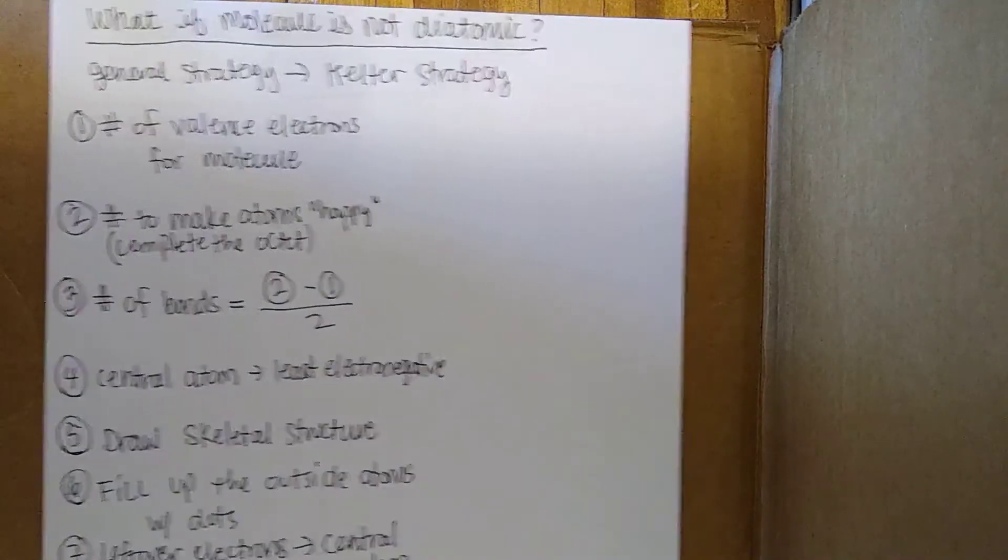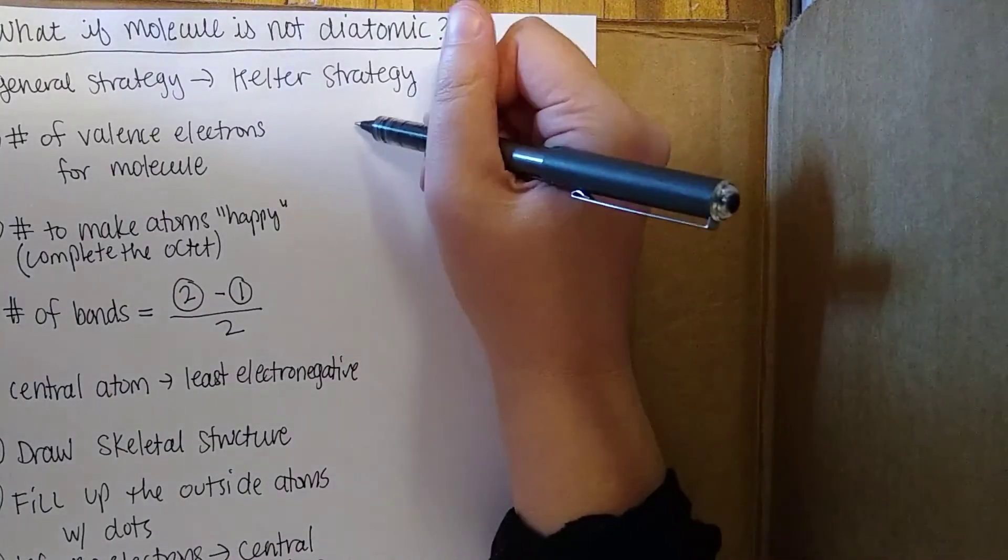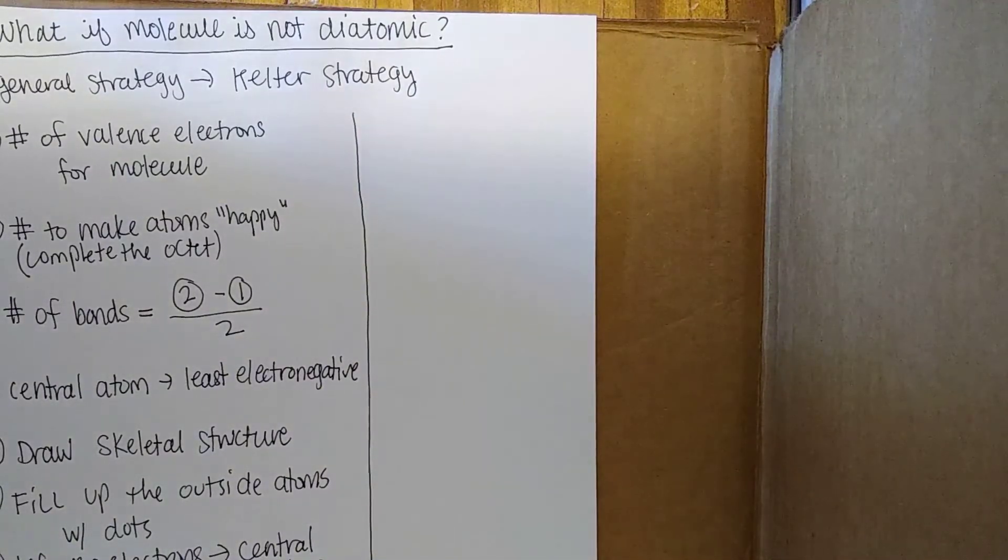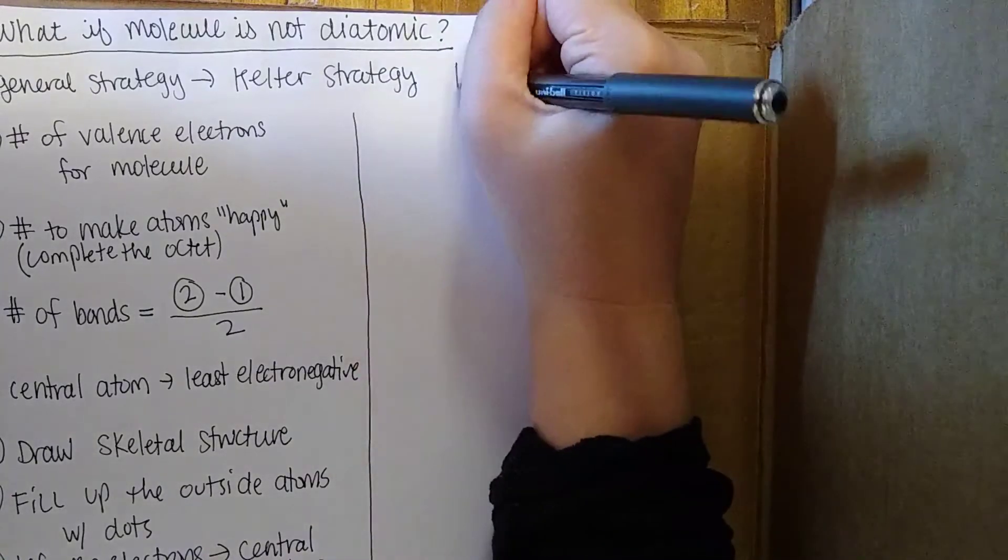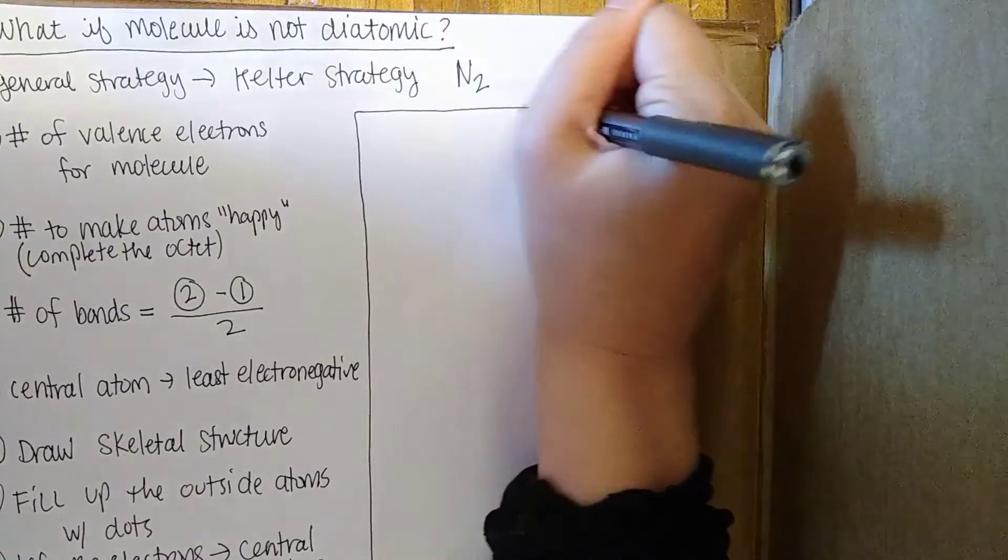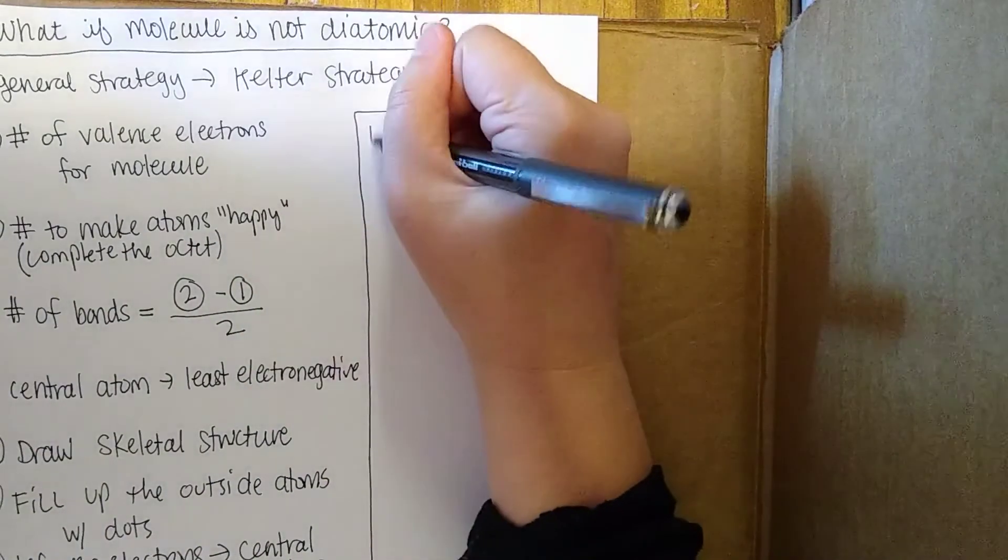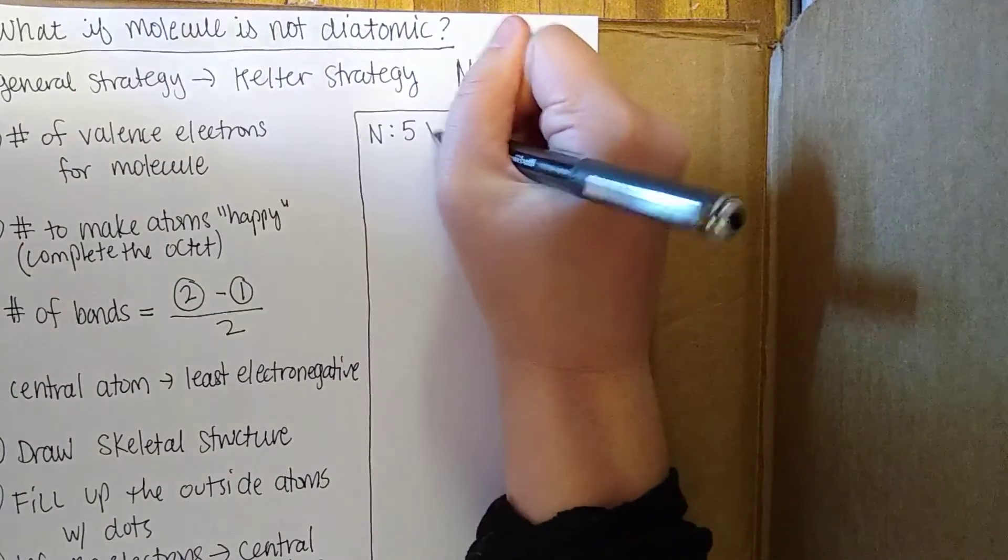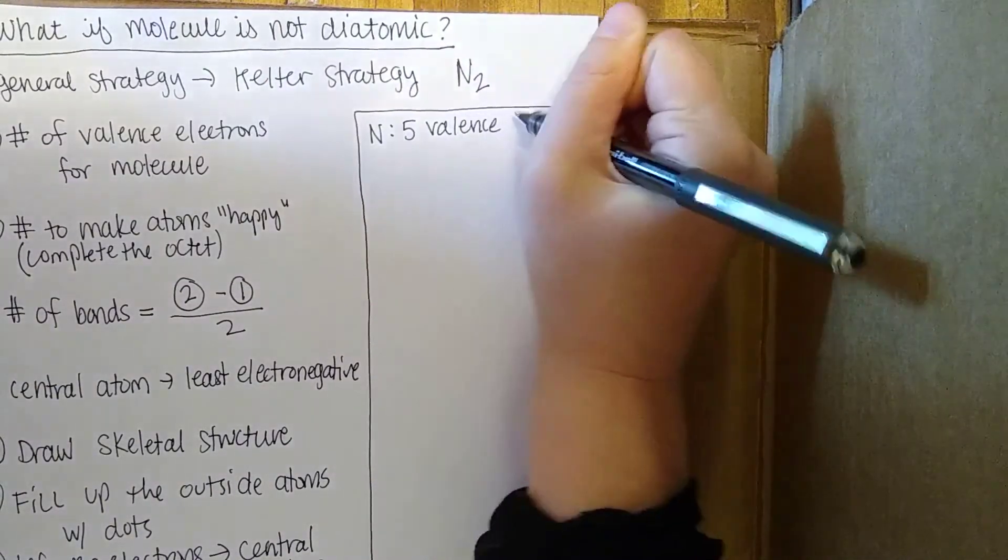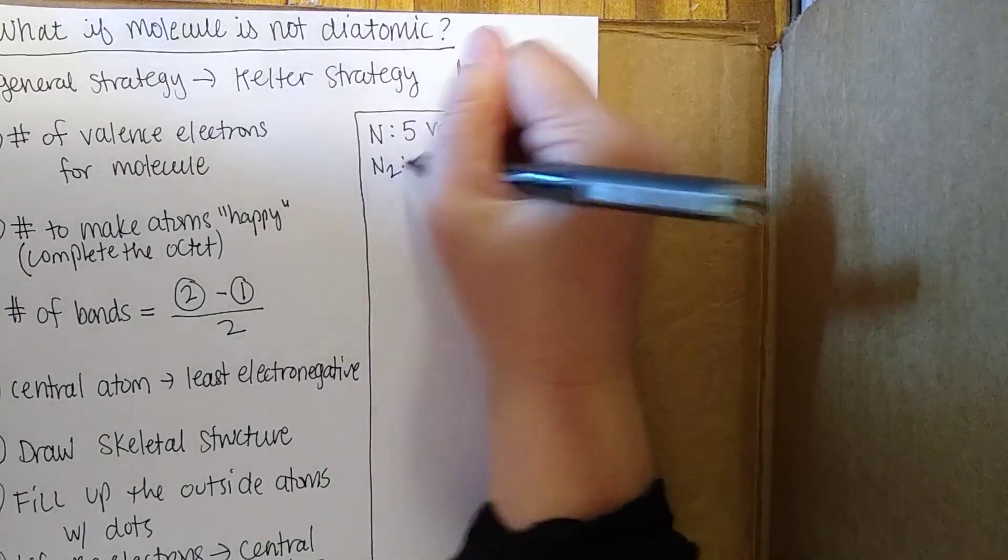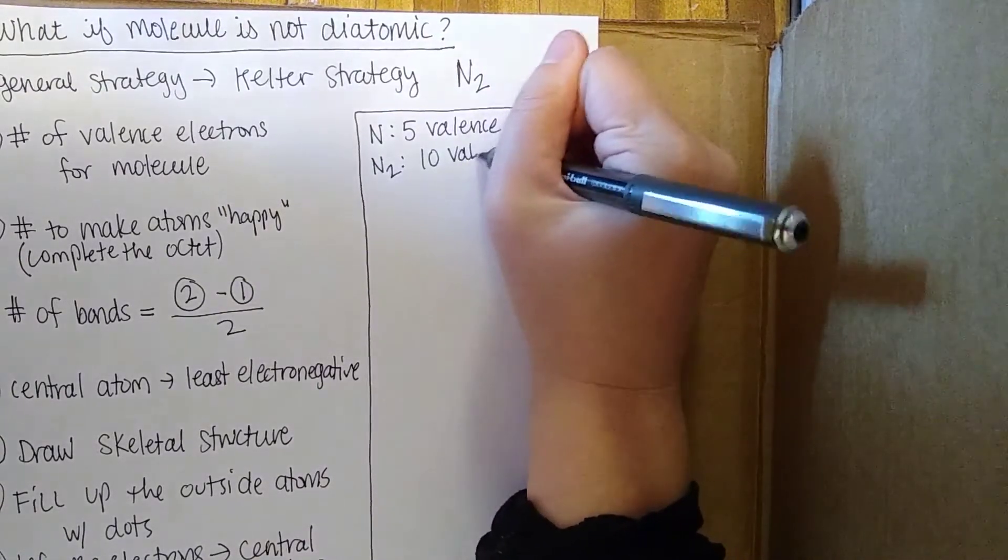So that might have sounded strange so let's do an example to make it make a little more sense. I left as an exercise in the last video for you guys to draw the Lewis structure of N2. So let's draw the structure of N2 using this Kelter strategy. We know nitrogen has 5 valence electrons, which means that N2 is going to have 10 valence electrons.